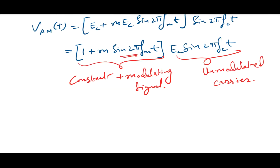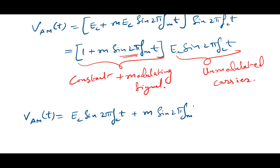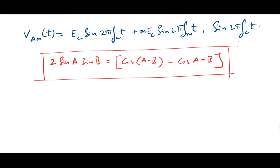Now let us expand this function. VAM(t) equals EC sin(2π fc t) plus MEC · sin(2π fm t) · sin(2π fc t). This product here is of the form sin A · sin B, so I can expand this using the trigonometric product formula, considering sin(2π fm t) as A and sin(2π fc t) as B.